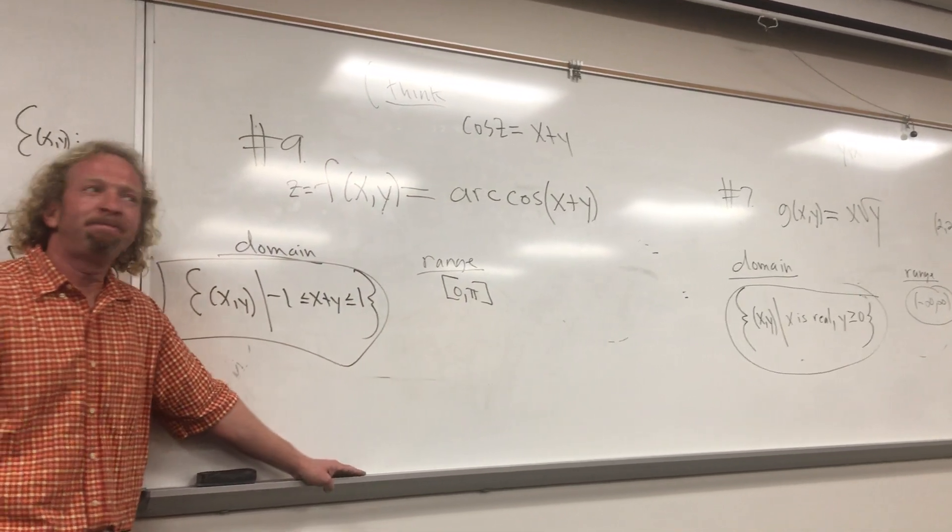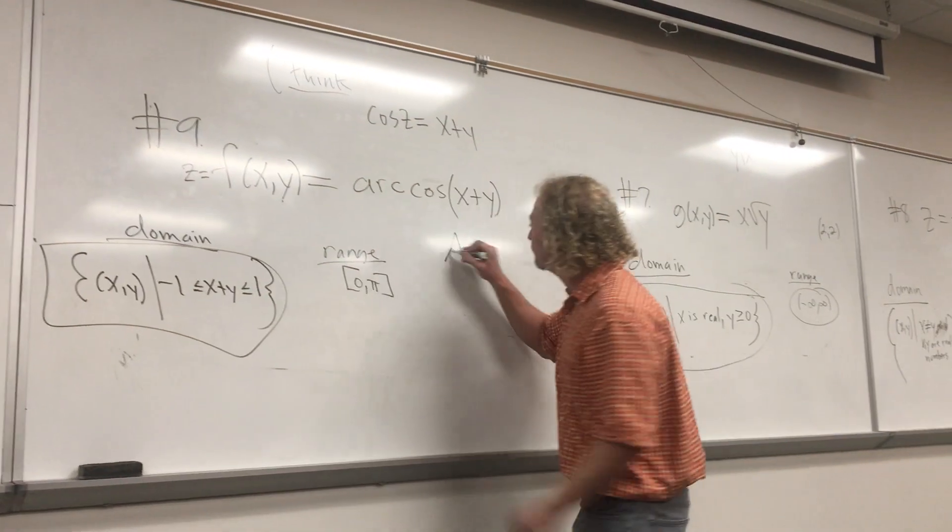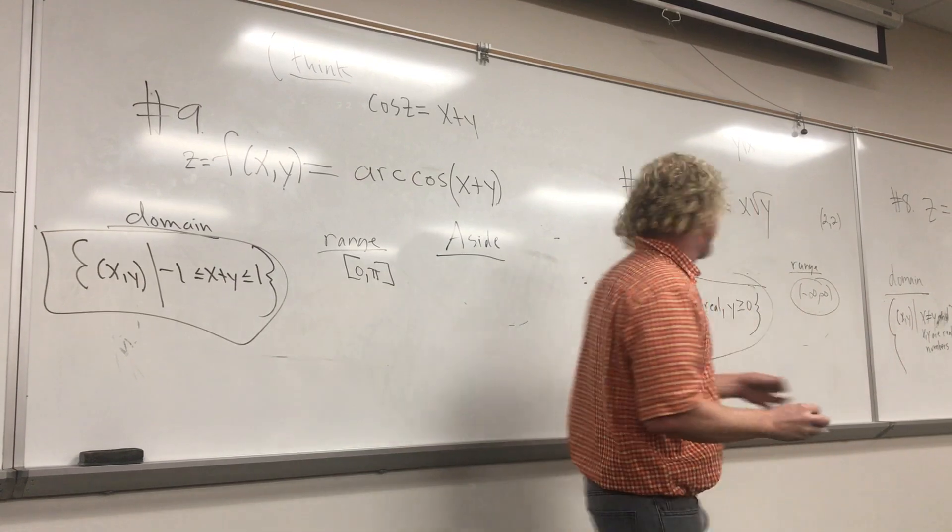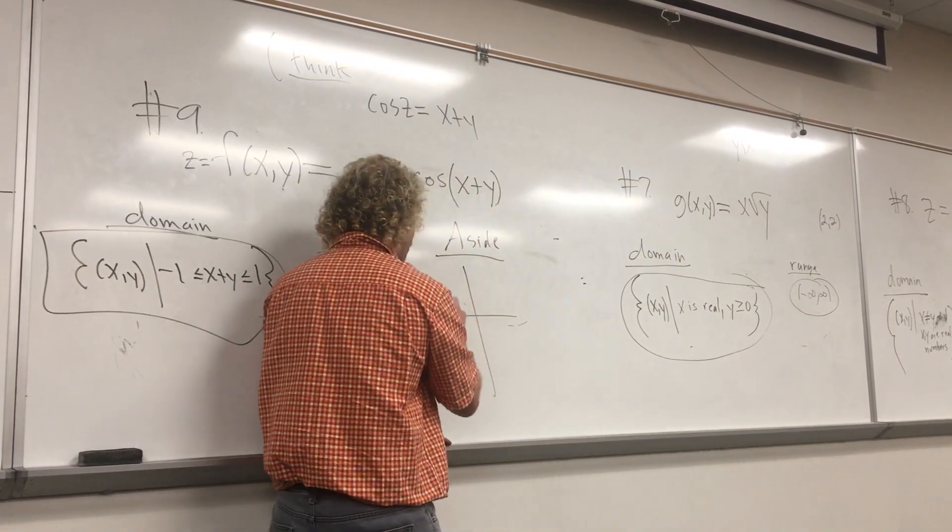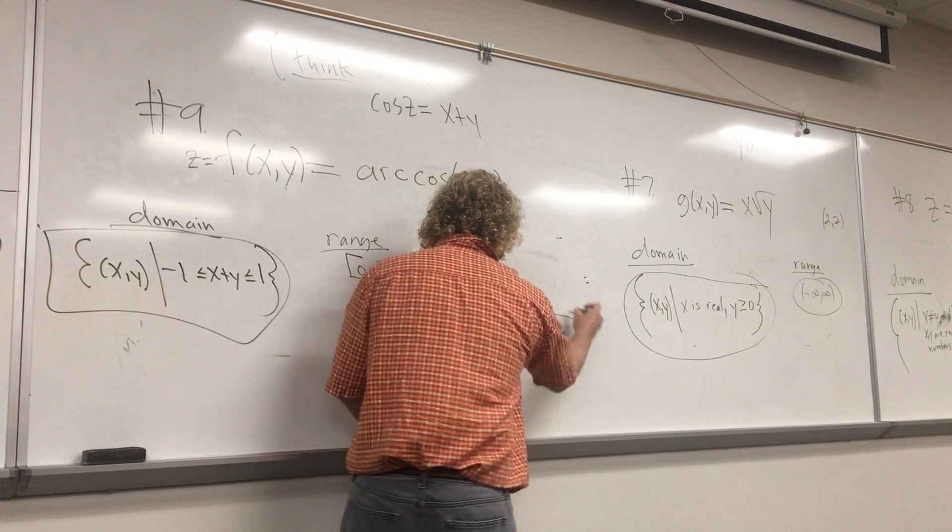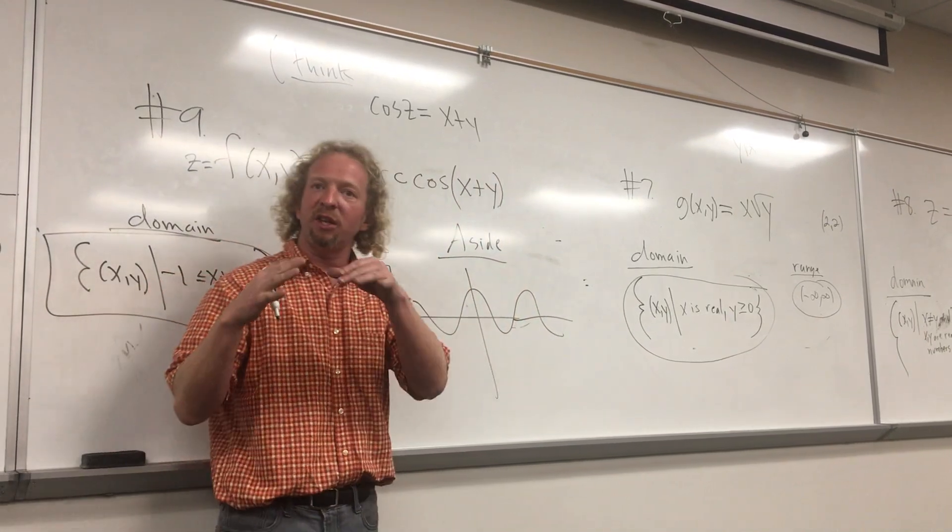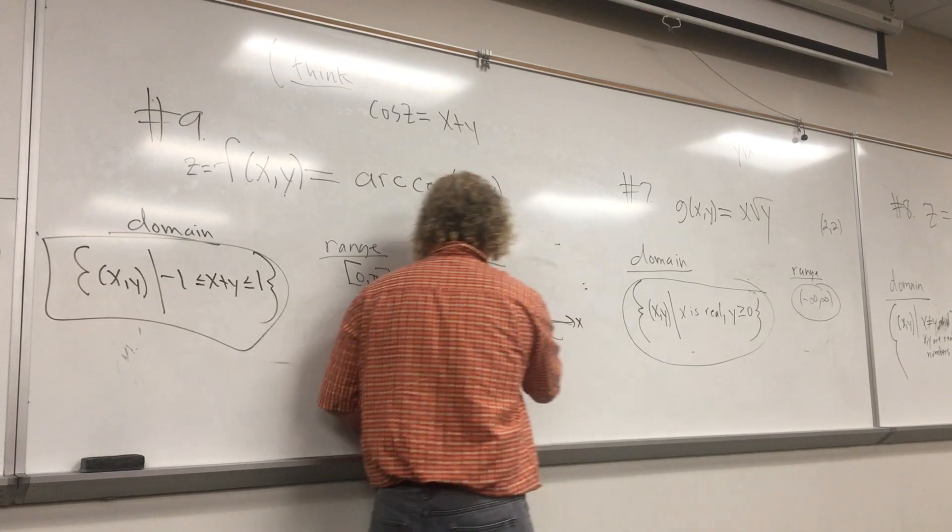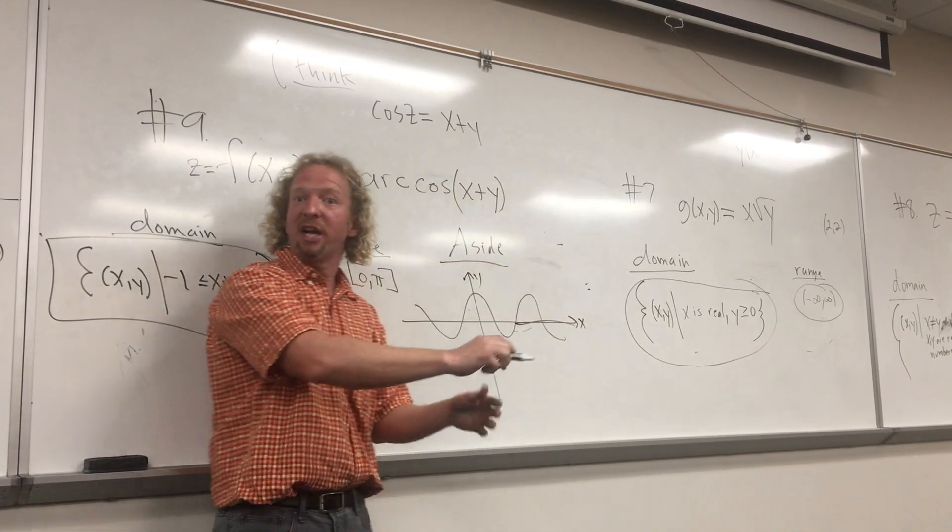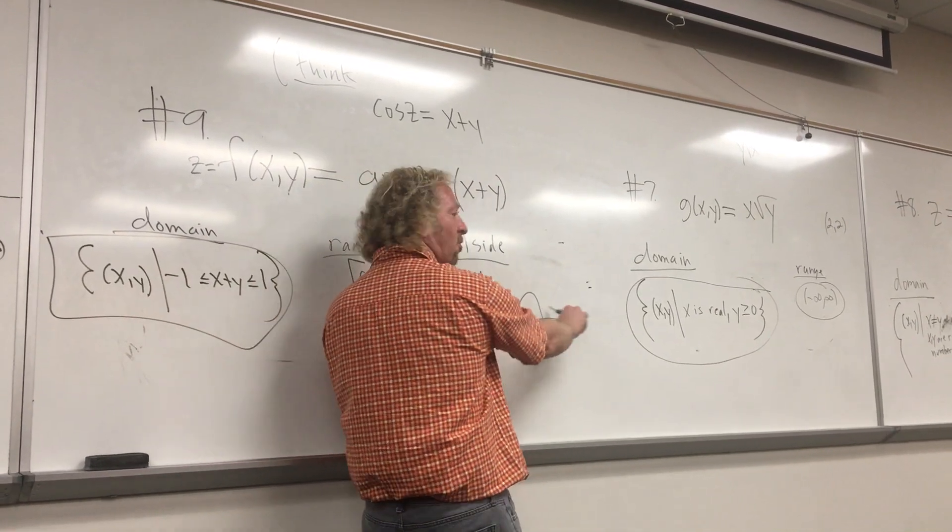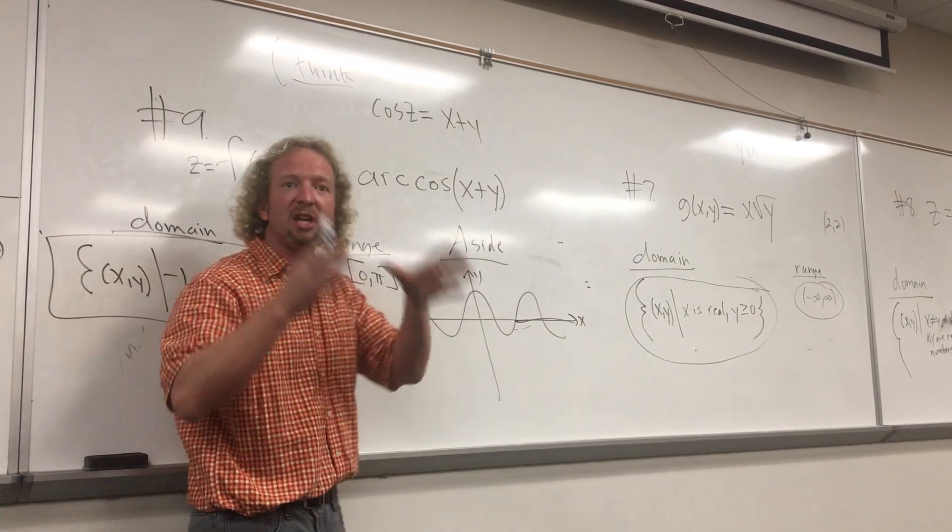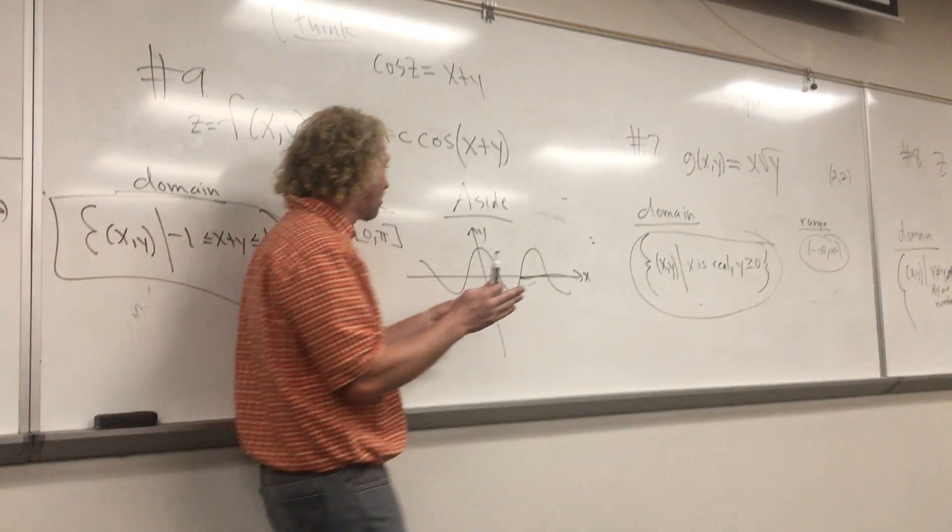When people create inverse functions, this is the cosine function. Like that. Something like that, right? When you're creating the inverse functions, the inverse cosine functions, they have to have inverses. That means they have to pass the horizontal line test. So if I draw a horizontal line, it crosses infinitely many times. So the cosine function doesn't have an inverse. It doesn't, right? So what people do is they restrict the cosine function, right? They say, okay, I'm going to look at cosine from here to here.